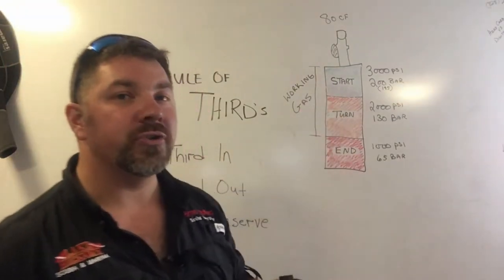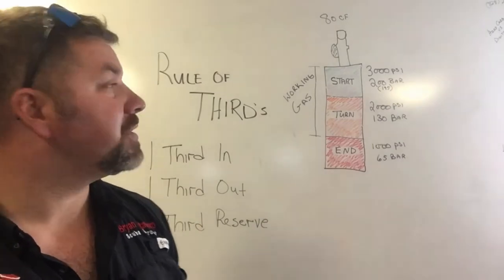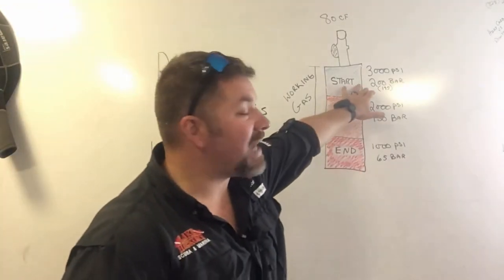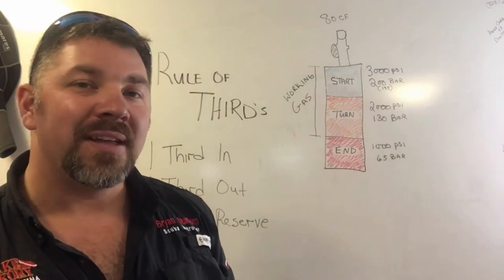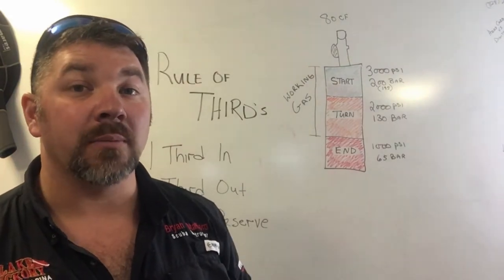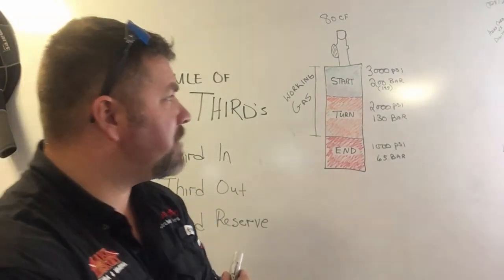When we plan this out, we're going to use a standard aluminum 80 cubic foot cylinder with 3,000 psi. If I take 3,000 and simply divide it by three, that gives me 1,000 psi increments to work with.